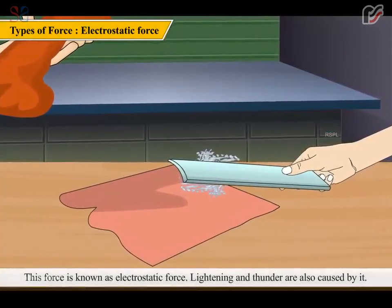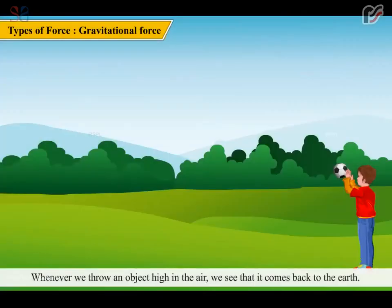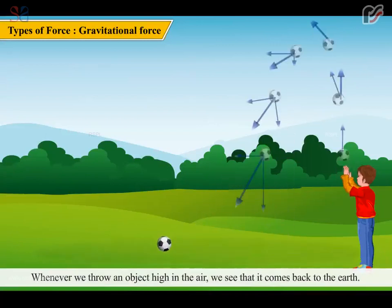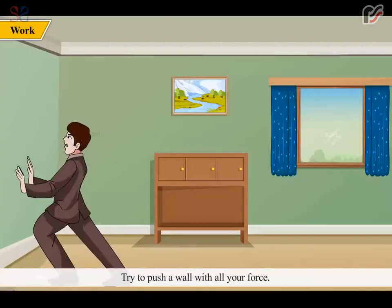Lightning and thunder are also caused by it. Whenever we throw an object high in the air, we see that it comes back to the earth. It is because the earth attracts the object towards it with a force known as gravitational force.